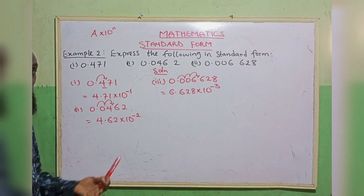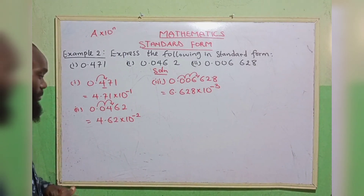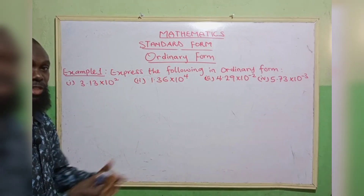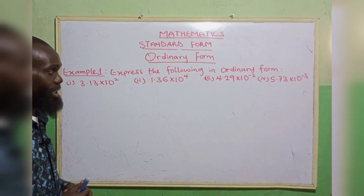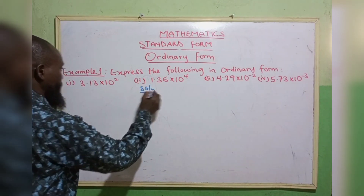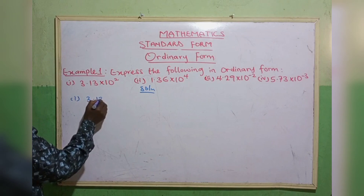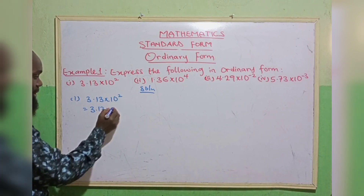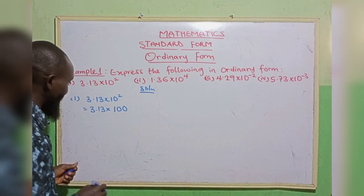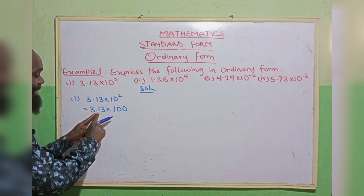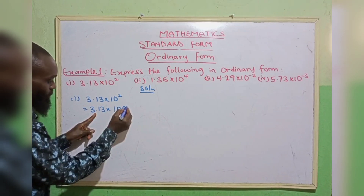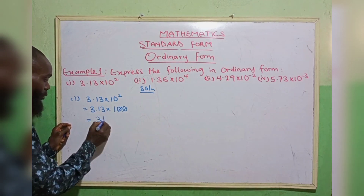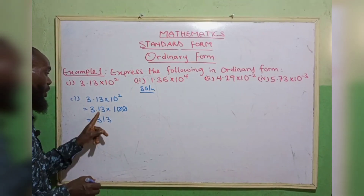Now we move on to converting ordinary form to standard form — or rather, given a standard form, how do we take it back to ordinary form? Example 1: express the following in ordinary form. We have 3.13 multiplied by 10 raised to the power of 2, which equals 100 — that is 2 zeros. At the back of the decimal point we have 2 digits, which are taken care of by the 2 zeros. So, removing the decimal point gives us 313.